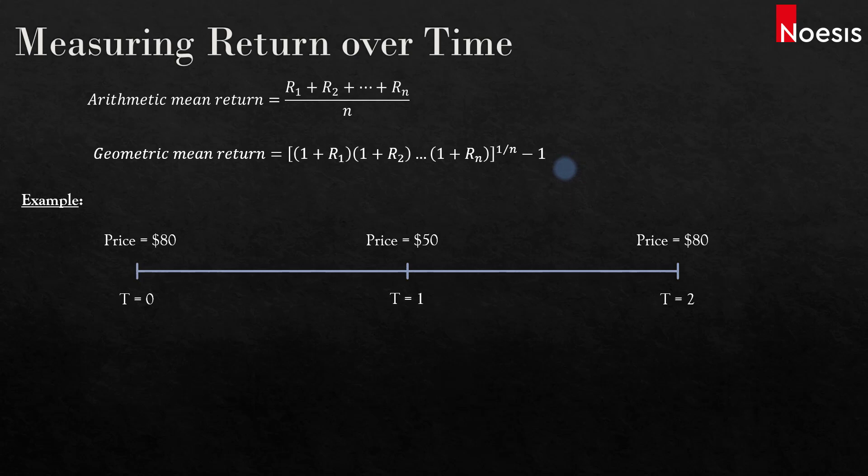Before we use the arithmetic or geometric mean return, let's calculate the return for each year. The return for the first year is the change in price: $50 minus $80. We take ending price minus beginning price, divide by the beginning price, and multiply by 100%. That gives us a return of negative 37.5%.